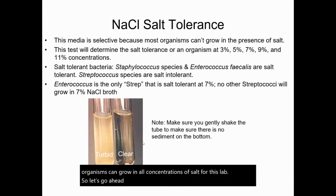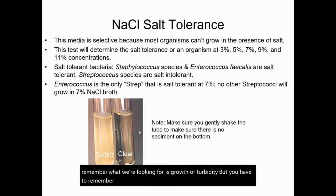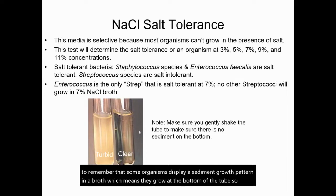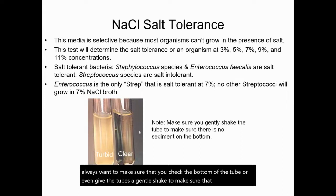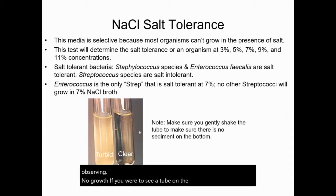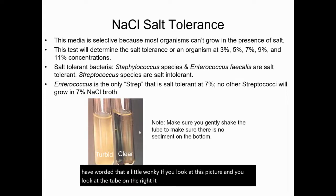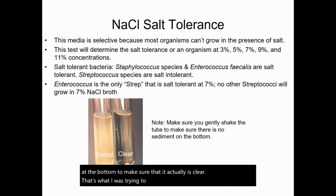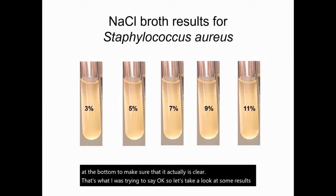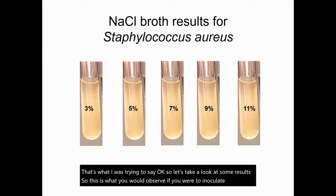Let's take a look at some of those results. What we're looking for is growth or turbidity, but remember that some organisms display a sediment growth pattern in a broth, meaning they grow at the bottom of the tube. So you always want to make sure you check the bottom of the tube or give the tubes a gentle shake to confirm you're actually observing no growth. If you look at the tube on the right in this picture, it looks very clear, but always give it a gentle shake or look at the bottom to make sure it actually is clear.